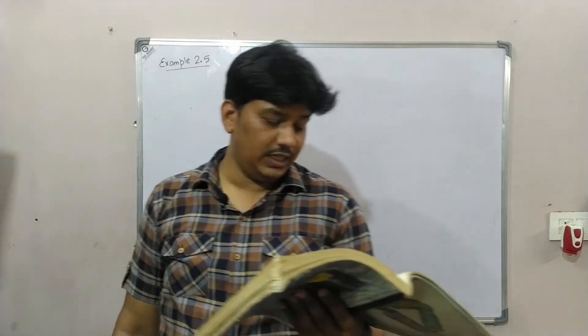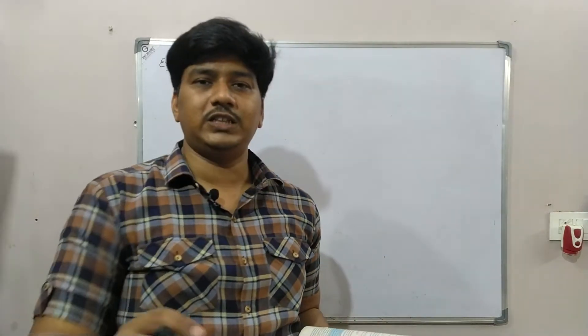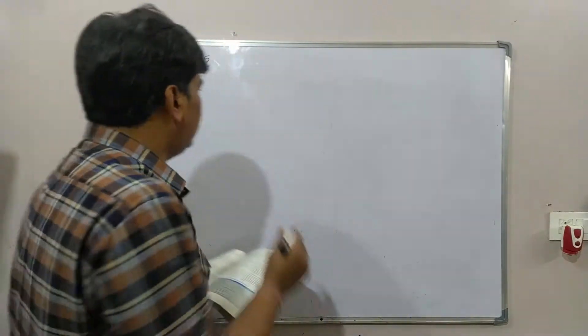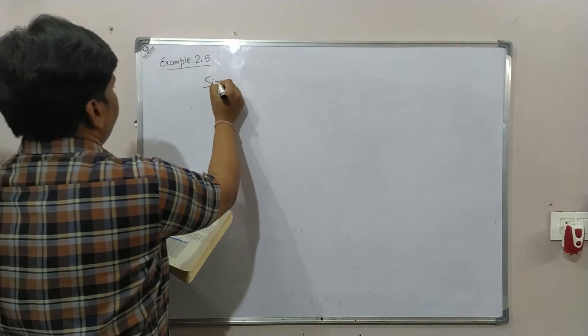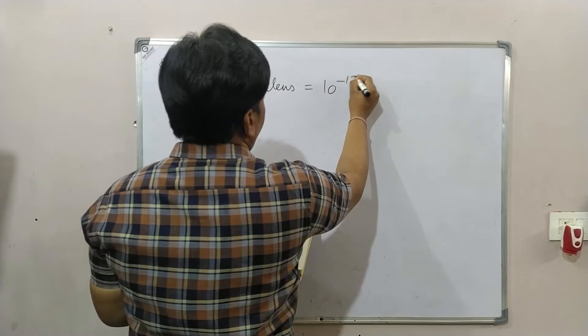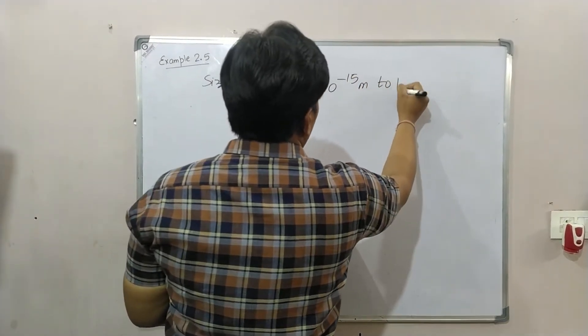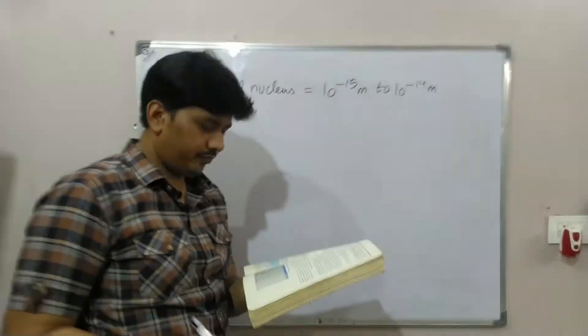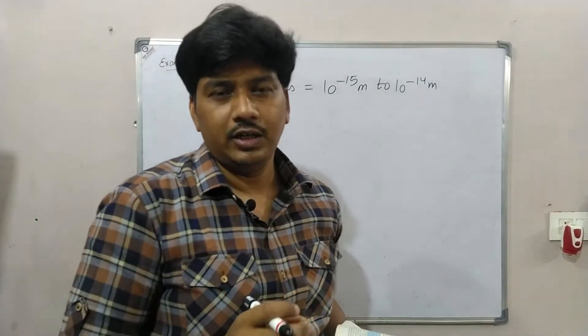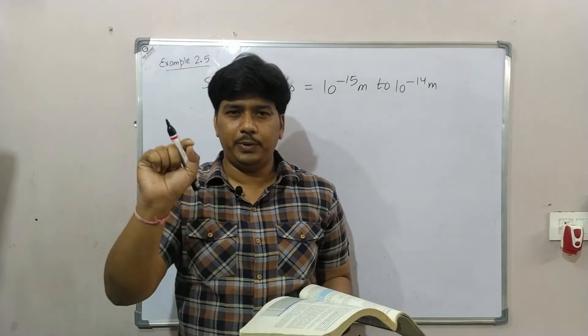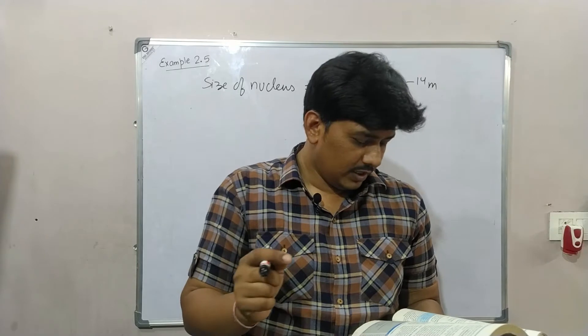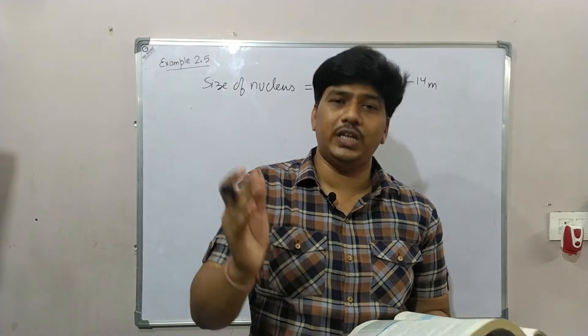If the size of the nucleus is in the range of 10 to the power minus 15 meter to 10 to the power minus 14 meter, the size of nucleus range is 10^-15 m to 10^-14 m, is scaled up to the tip of a sharp pin. We scale it up to the size of the pin tip, meaning we increase this range.